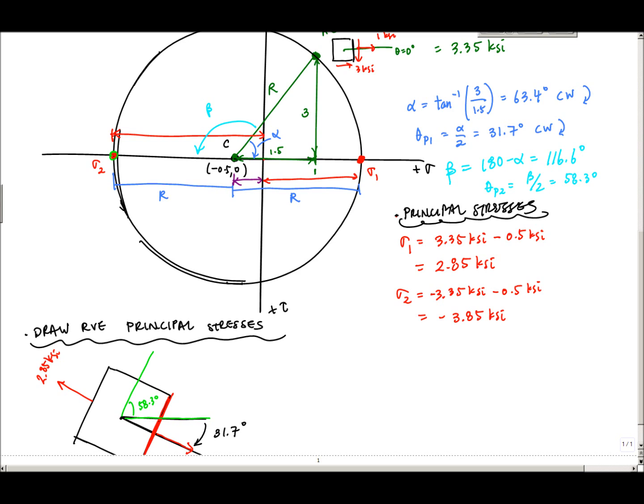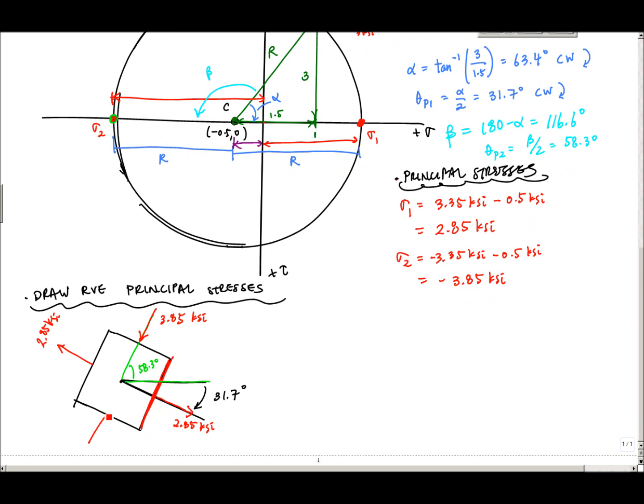So here, sigma 2 is at this face right here. My state of stress now, at this face representing 58.3 degrees, it's negative 3.85, meaning compression. 3.85 KSI on the face here, and then equal and opposite 3.85 KSI. This is my principal stress state. There are no shear stresses in my principal stress state.